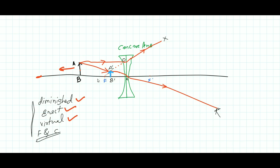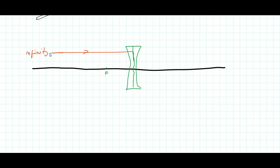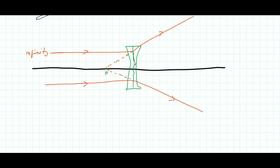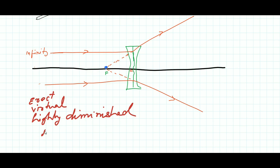I am drawing the second ray diagram for the case when the object is at infinity. Two parallel rays coming from infinity fall on the concave lens, and after refraction they appear to be coming from the focus point F. The image formed will be very small in size and will be at F. The nature of the image when the object is at infinity is: erect, virtual, highly diminished, and its position is at the focus.